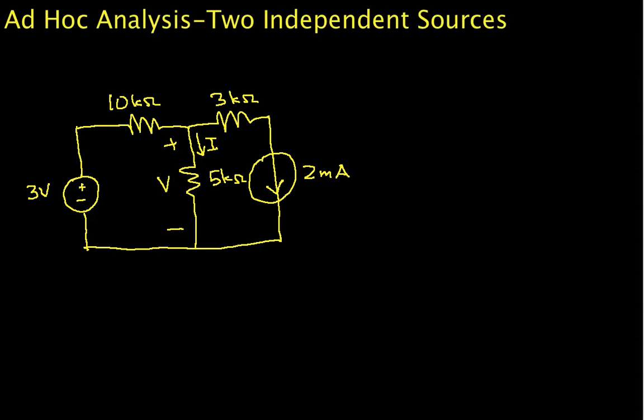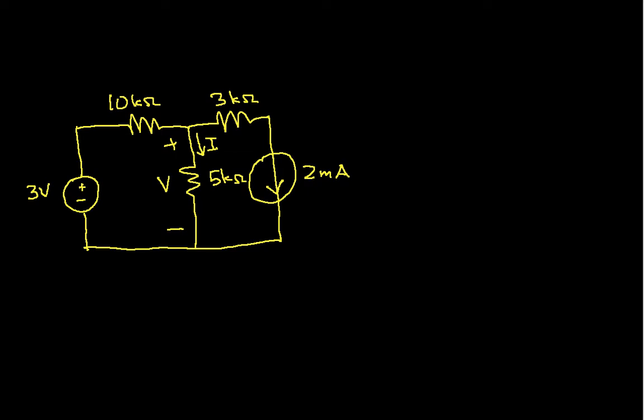Okay, welcome to this video in which we will show how to apply ad-hoc analysis to find a voltage and a current in a circuit with two independent sources. If you have two independent sources in a circuit and you don't have a single loop or a single node circuit, using ad-hoc analysis can get sort of complicated as we will demonstrate.